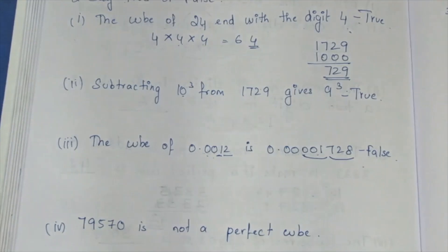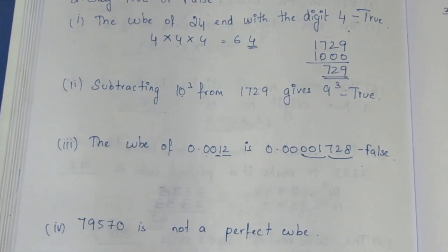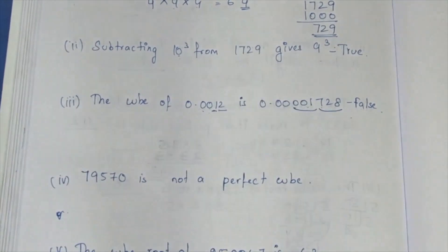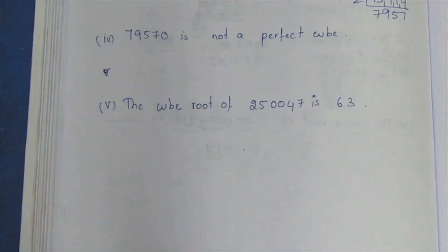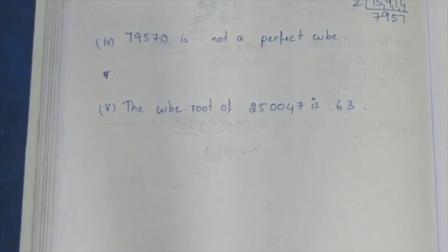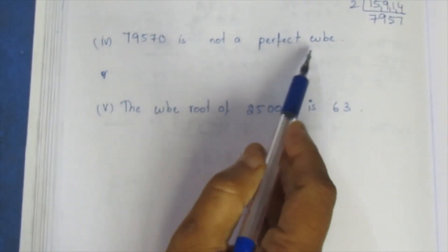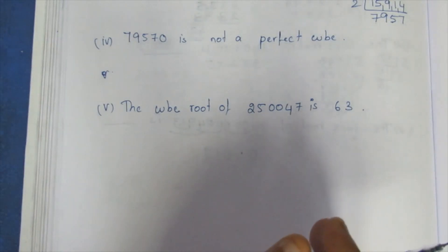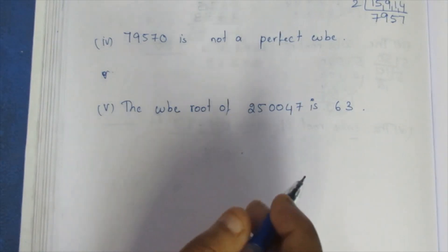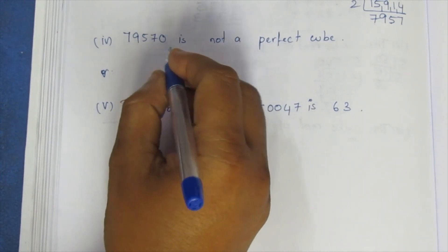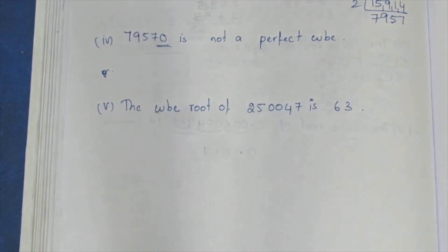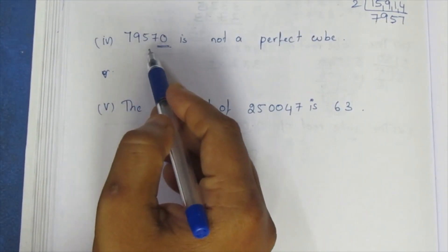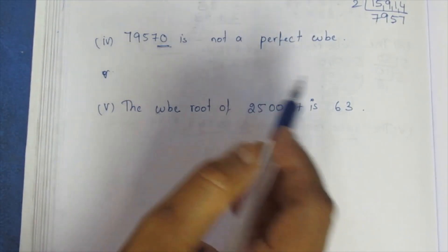It's easy to do this. If you don't multiply the numbers, we can solve the numbers. Now let's look at the fourth question. 79570 is not a perfect cube. So let's prove it without a perfect cube. How do we do it? Let's take a cube root. Let's take a prime factorization. This is an easy method.